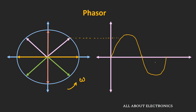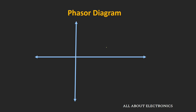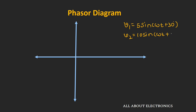Now let us see how we can represent a Phasor on a Phasor diagram. On the Phasor diagram, different AC sinusoidal signals having the same frequency but different amplitude and different phase are represented. While representing these Phasors on the diagram, we only represent them by the amplitude and the initial phase. For example, let's say we have two sinusoidal signals: the first is V1 = 5sin(ωt + 30°) and the second signal is V2 = 10sin(ωt + 80°), and we want to represent these two signals on a Phasor diagram.